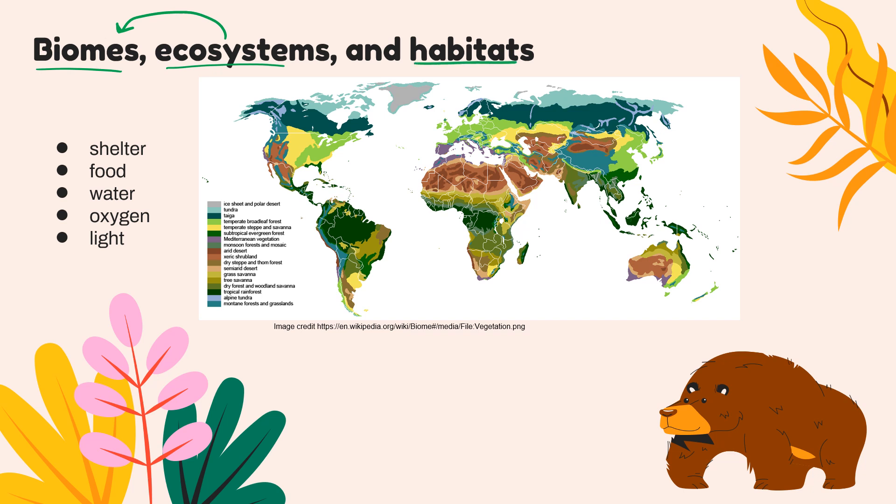Habitats are the specific geographical or physical locations within the ecosystem where organisms live. Often it's not just where a single species lives, but where communities are living — communities sharing a habitat. Habitats are going to provide for the organisms in them: shelter, food, water, oxygen, and light.